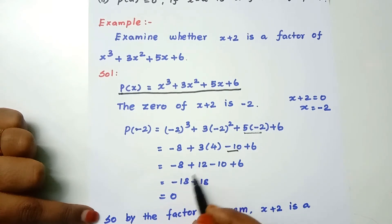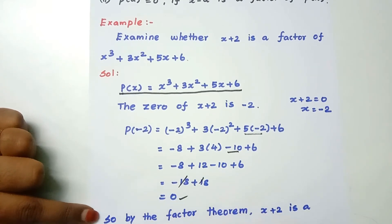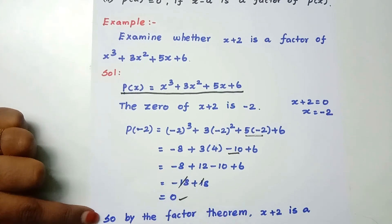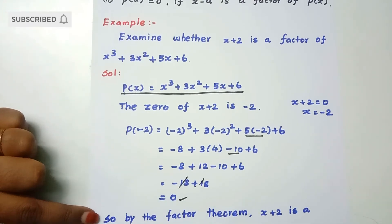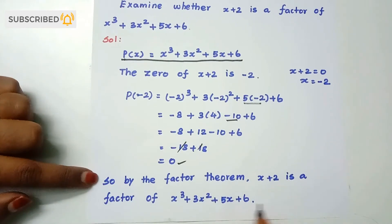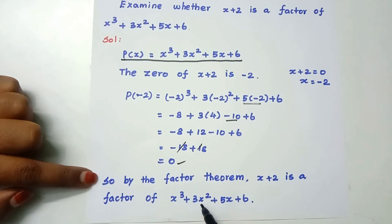Minus 8 plus 18 gives plus 18 on the positive side, and minus 18 on the negative side — these cancel to give zero. Since P(−2) equals 0, by the Factor Theorem, x plus 2 is a factor of x cubed plus 3x squared plus 5x plus 6.